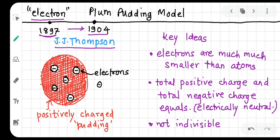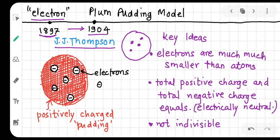Thomson's plum pudding model: imagine a spherical sphere — like a watermelon, consider just the red part. That red material represents a positive charge — a continuous positively charged pudding. Embedded within it are the negative charges, the electrons. This is the structure J.J. Thomson put forth — a positive sphere with negative electrons embedded inside.